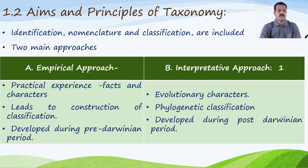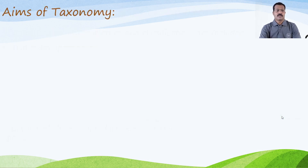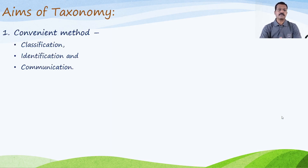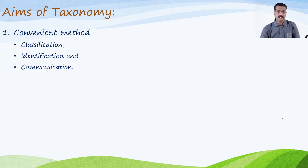Regarding the particular aims of taxonomy: the very first and important aim is to provide a convenient method of classification, identification, and communication.